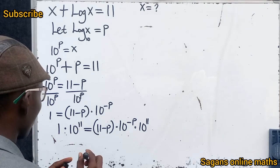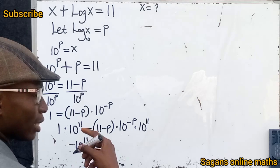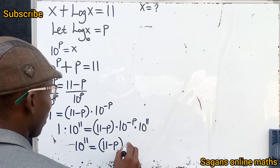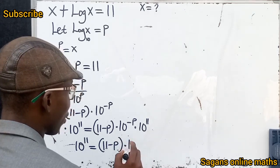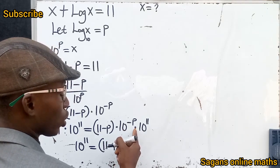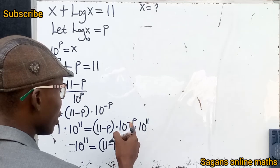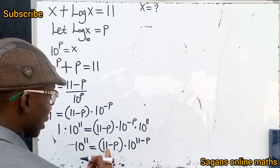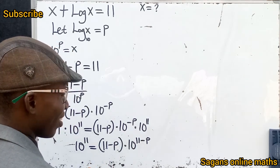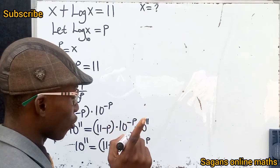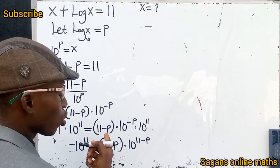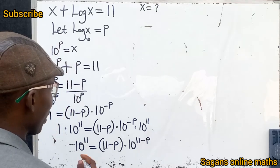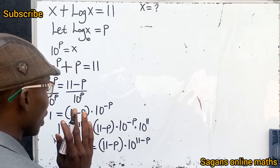1 × 10^11 = 10^11 on the left side. On the right side, by the law of indices, since the bases are the same and we have multiplication, we add the exponents: -p + 11 = 11 - p. So we get 10^11 = (11 - p) · 10^(11 - p). We are maintaining equation balance throughout.